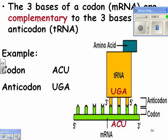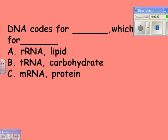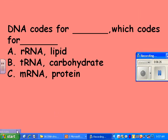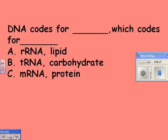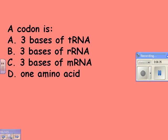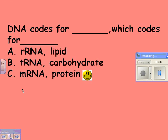Quiz time: DNA codes for RNA, which codes for proteins — and that RNA would be messenger RNA. DNA will also code for the other RNA types, but it's the messenger RNA that codes for a protein.